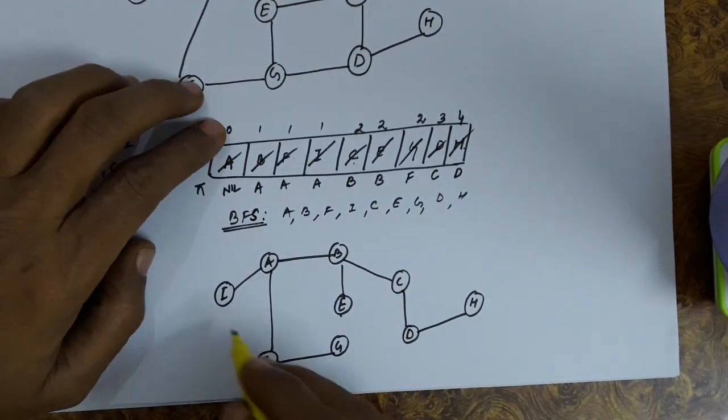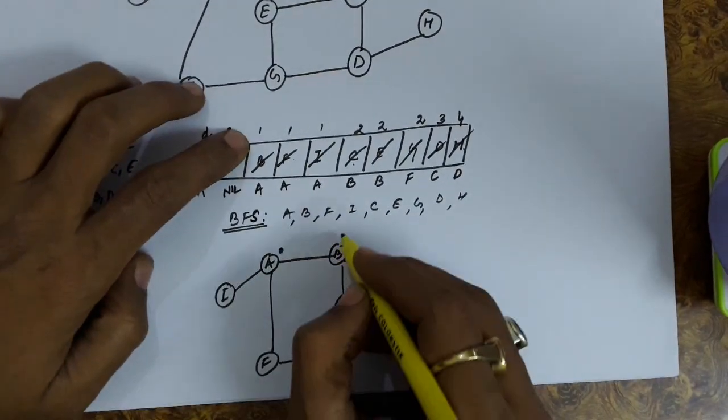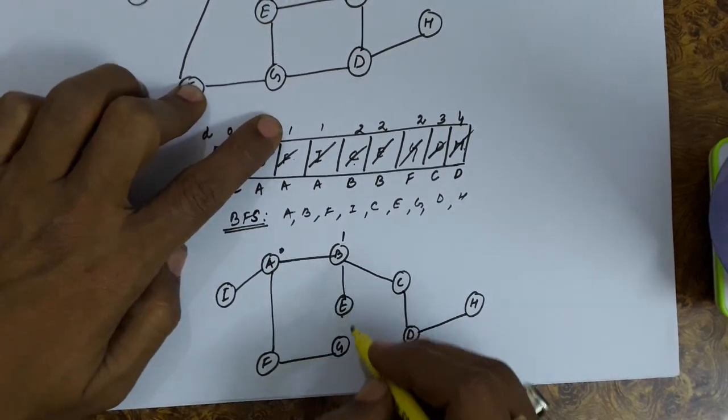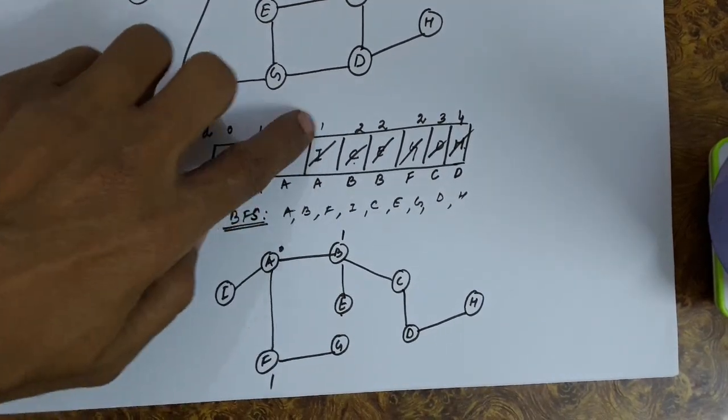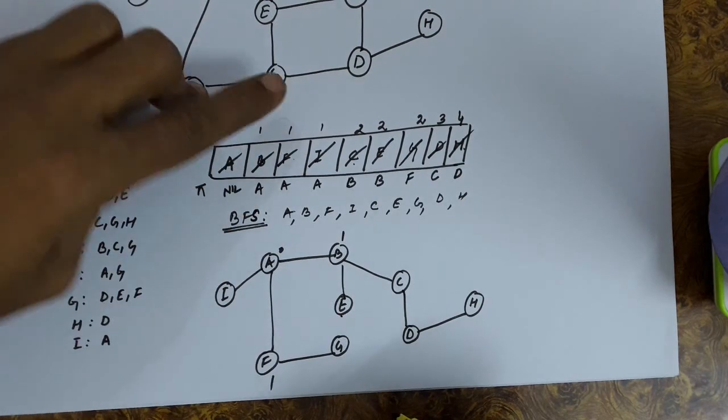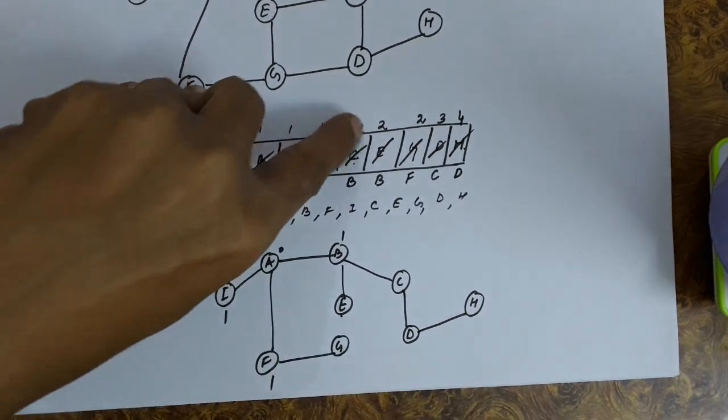You can set the distances. A has a distance zero. B has a distance one. F has a distance one. I has a distance one. C has a distance two.